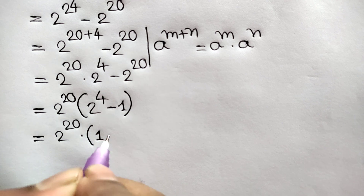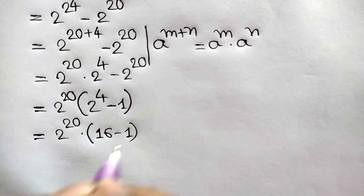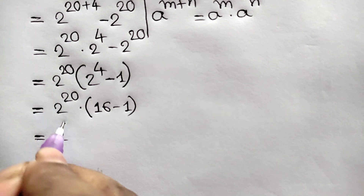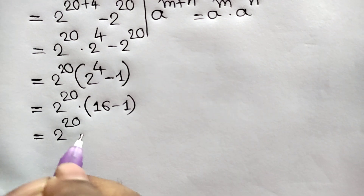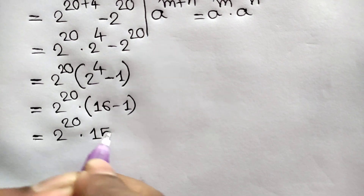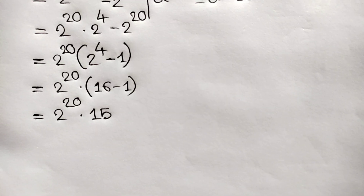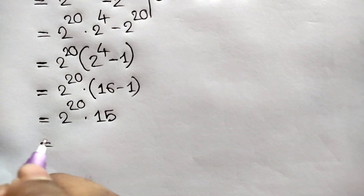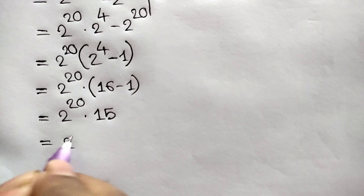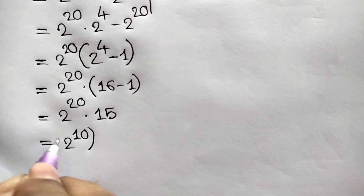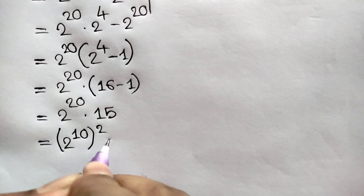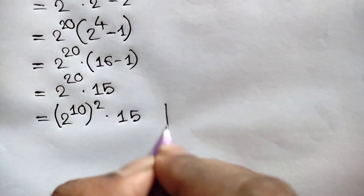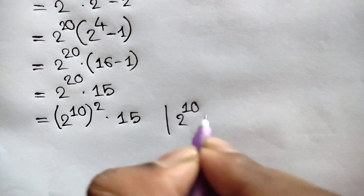2 to the power 4 is 16, so we get 2 to the power 20 times (16 minus 1), that means 15. This is equal to 2 to the power 20, which can be written as 2 to the power 10, whole squared, times 15. Now we know 2 to the power 10 is 1024.